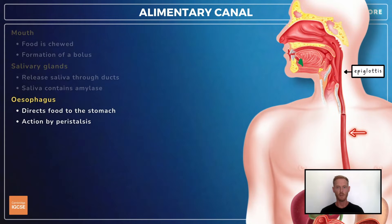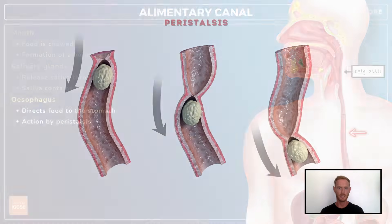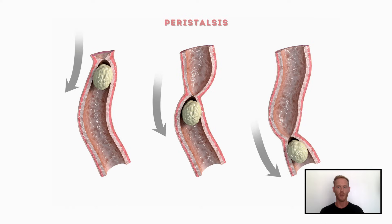The bolus is moved to the back of the mouth by the tongue and swallowed. It then moves over the epiglottis, a flap that prevents food from entering the windpipe, and into the esophagus, a muscular tube which forces food into the stomach by peristalsis. Peristalsis is caused by a wave of contractions in the muscular walls of the esophagus that occur just above the bolus, squeezing it down through the tube.